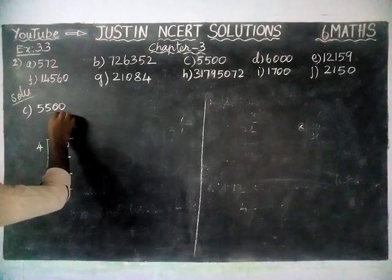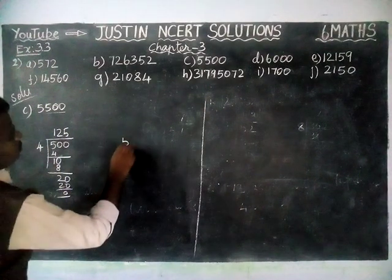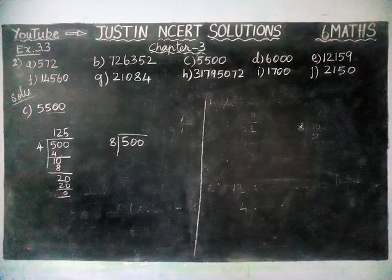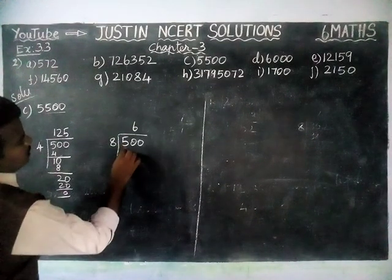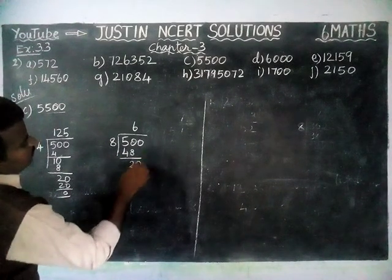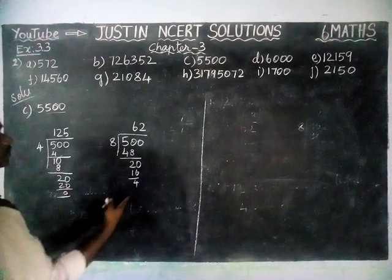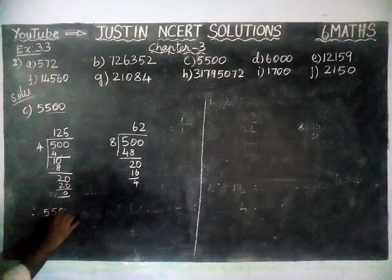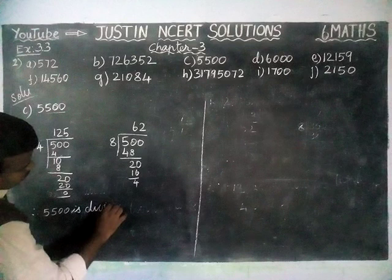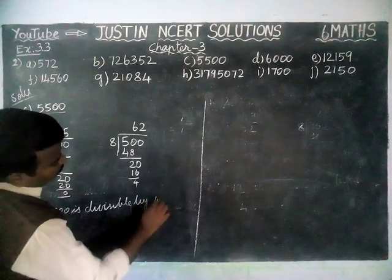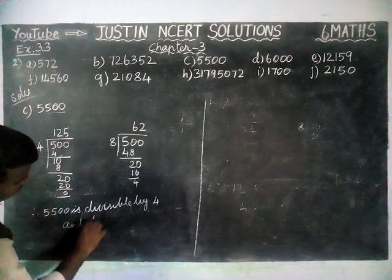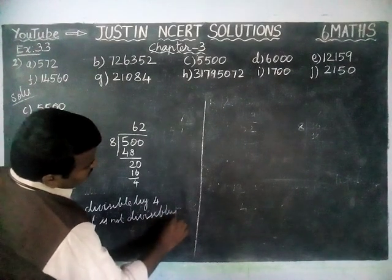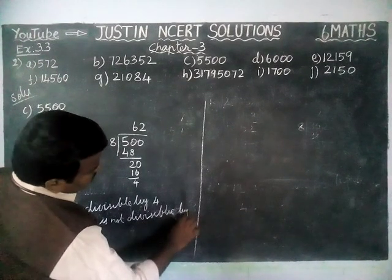Next we check divisibility by 8. The last 3 digits are 500. Dividing 500 by 8: in 50, 6 eights are 48, remaining 2, bringing down 0 gives 20. 2 eights are 16, remaining 4. Remainder 4 is coming, so this is not divisible by 8. Therefore 5,500 is divisible by 4 but not divisible by 8.